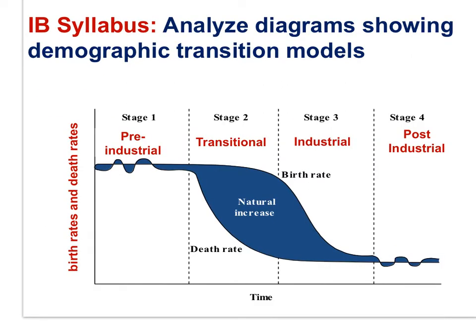Demographic transition has four stages: pre-industrial, transitional, industrial, and post-industrial. The graph displays birth rates and death rates over time through the four stages. In the pre-industrial stage, crude birth rates and death rates are both high, but natural increase rate is low. The population is not growing.